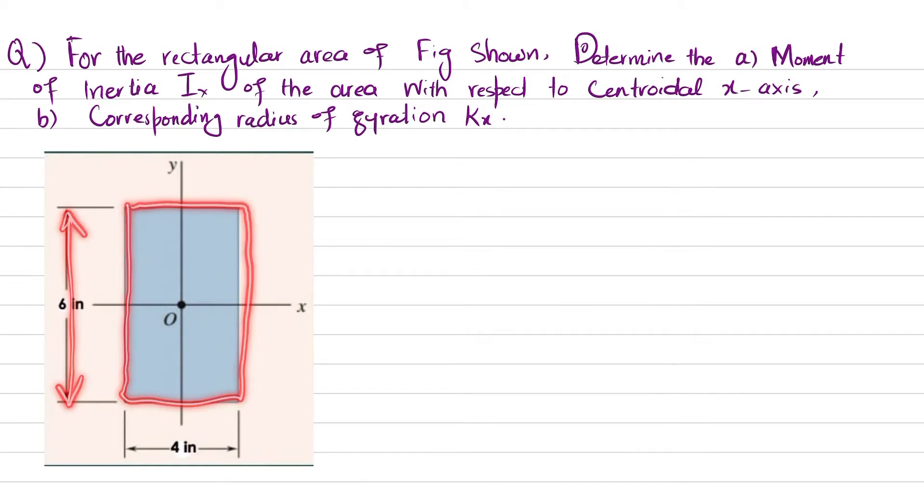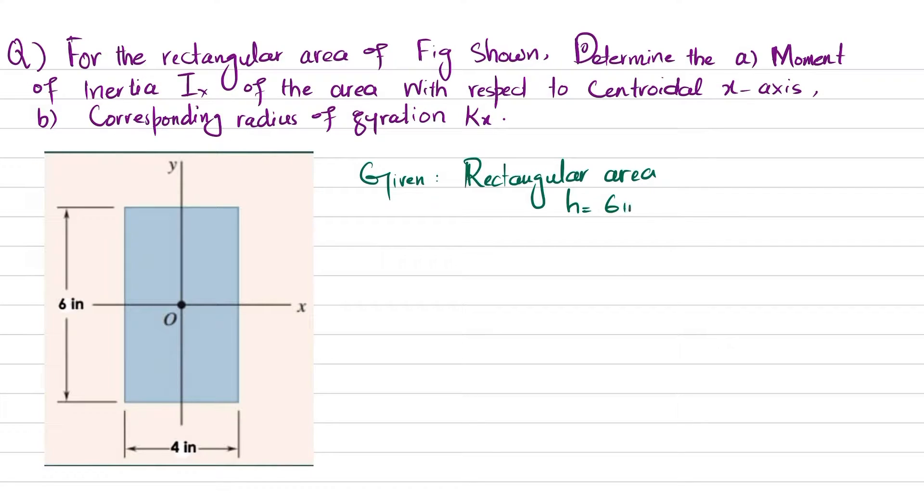Width is four inch and this is the neutral axis passing through centroid O and that is x. So we have to find the moment of inertia Ix with respect to this centroidal axis. Let's start with the given data. It is given that this is rectangular area having height equal to six inch and width b equal to four inch.